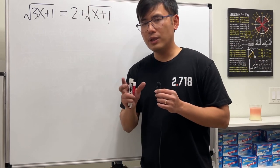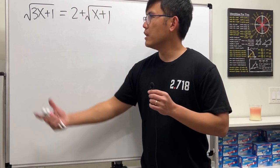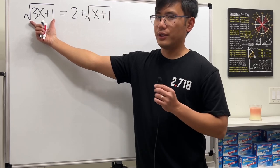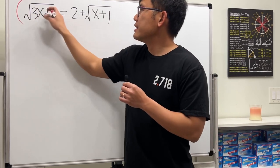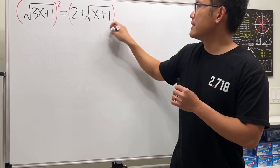First, we want to make sure that one of the square roots is isolated. In this case, this is isolated, so that's good. So we can just proceed by squaring both sides, like this.